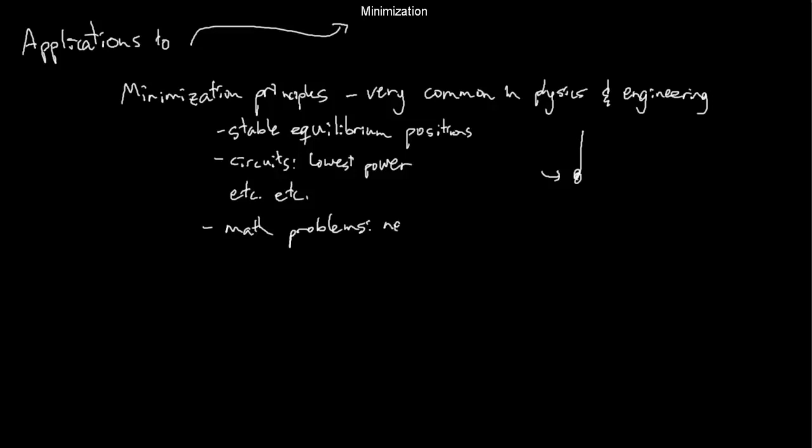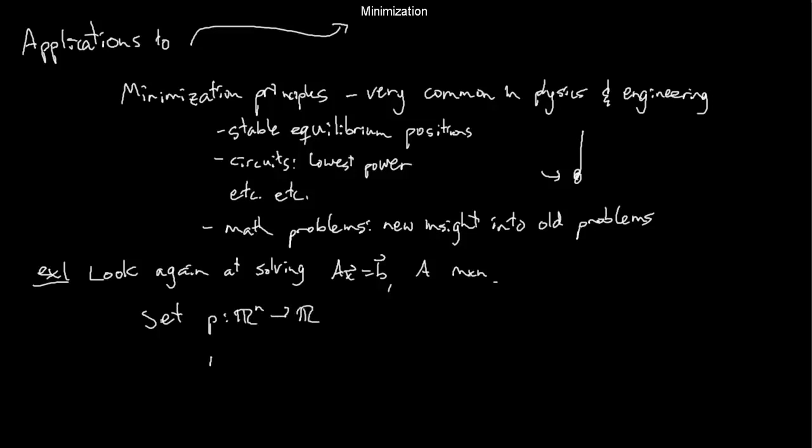You've been doing minimization problems in math for a couple of years now. We can get some new insights, some algebraic insights, into old problems using this idea of positive definiteness. Before we do that, let's give another application. Let's look at solving Ax = b where A is some m by n matrix. You would use Gaussian elimination. But if I think about it another way, I can define a function from R^n to R. It takes a vector x and computes the norm of Ax minus b, or maybe the norm squared.